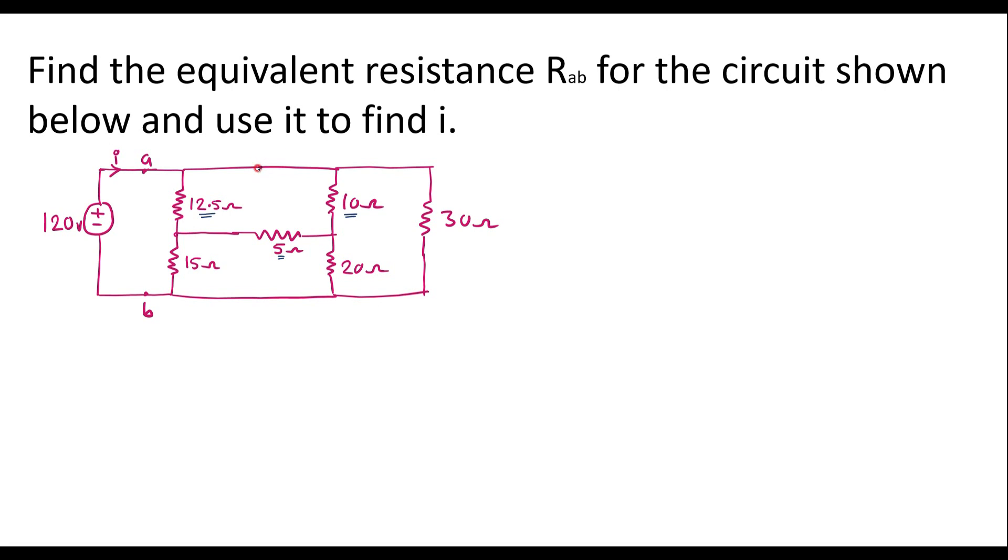So the virtual star circuit may look like this. Here we will get one resistor, here we will get one resistor, and here we will get one resistor. I will call this resistor as RA, this is RB, and this is RC. I will see how to find RA, RB, and RC.